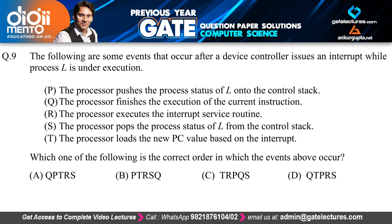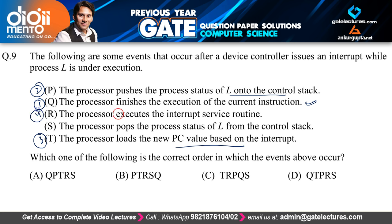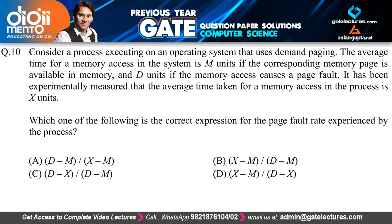Mapping to the given options: first the processor finishes execution of the current instruction (Q), second it pushes the process status of L onto the stack (P), third it loads the new program counter value based on the interrupt (T), fourth it executes the interrupt service routine (R), and fifth it pops the process state of L from the control stack (S). The order is Q, P, T, R, S — matching option A.